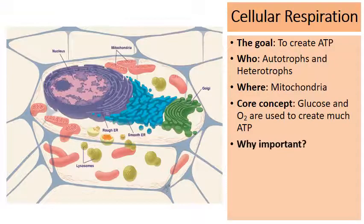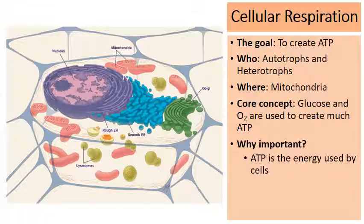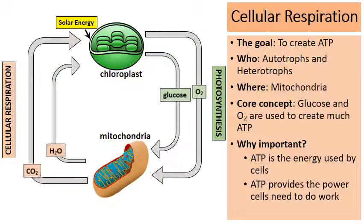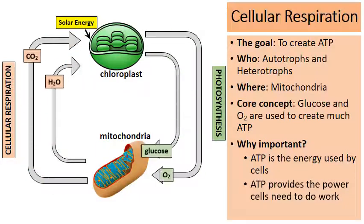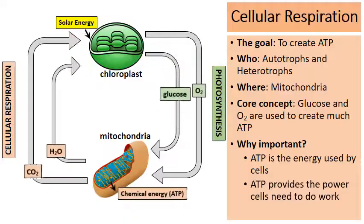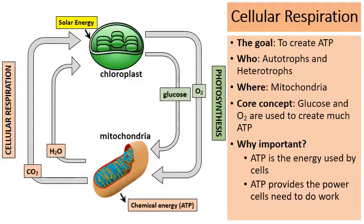Why is cellular respiration so important? ATP — adenosine triphosphate — is the fuel that your cells use. All cells need energy, and that energy comes in the form of ATP. In this animation, the chloroplast through photosynthesis produces glucose and oxygen; that glucose and oxygen go to the mitochondria, which creates ATP — the energy for cells to do the work they need to do to survive.